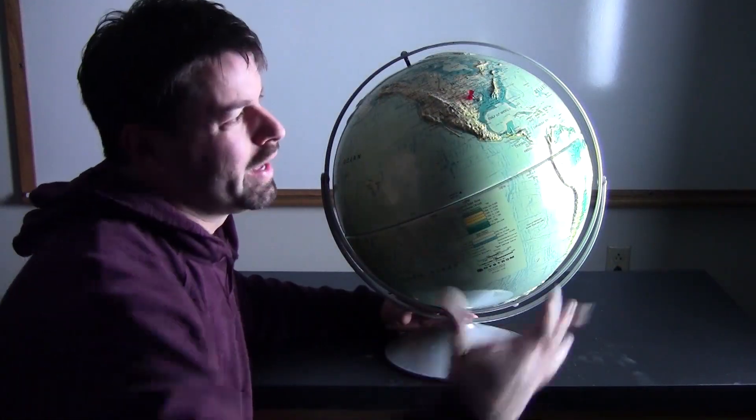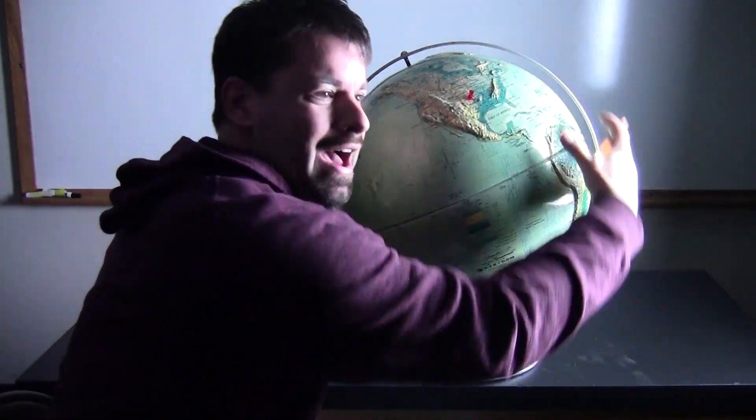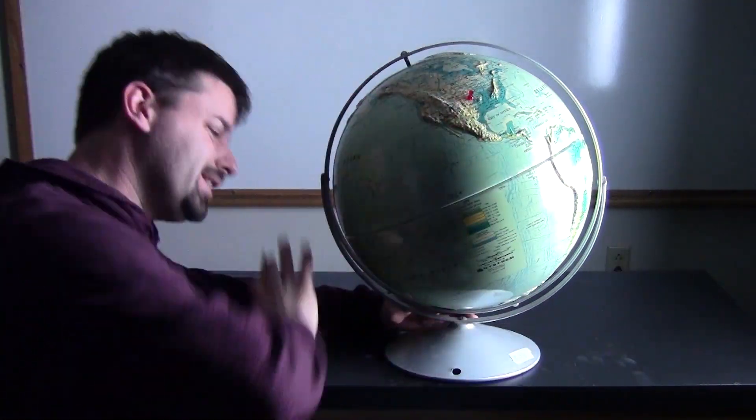So we have turned off our lights, we have our Sun off to the side shining on our Earth. This half of the Earth is lit up. This half is dark. This half is in daytime. This half is in nighttime.